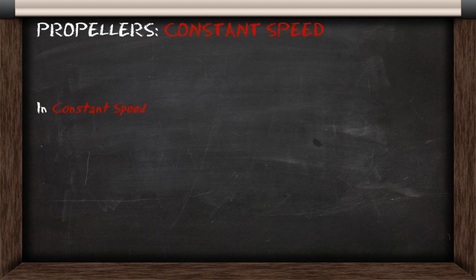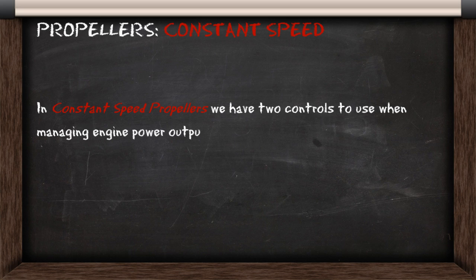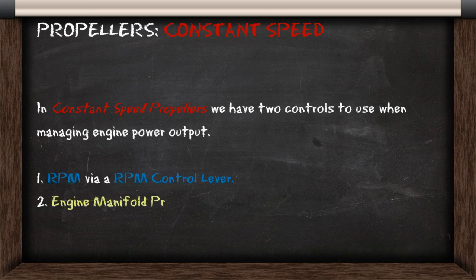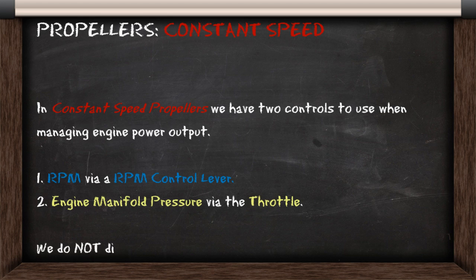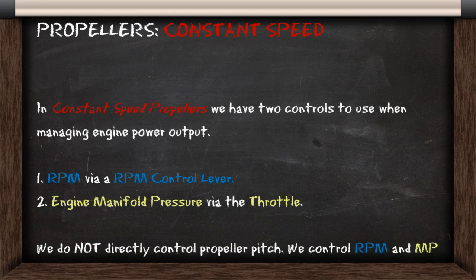In constant speed propellers, we have two controls to use when managing our engine power output. We have to manage RPM via an RPM control lever, and then we manage engine manifold pressure via the throttle. Remember that we do not control propeller pitch directly — we are controlling RPM and manifold pressure.